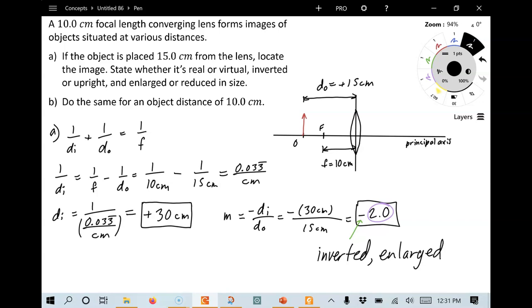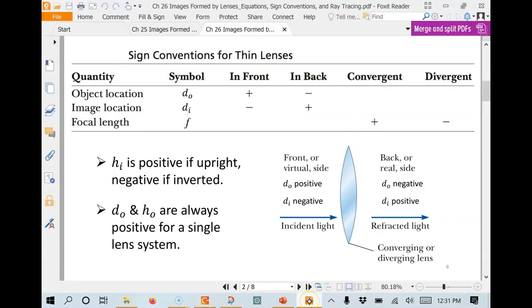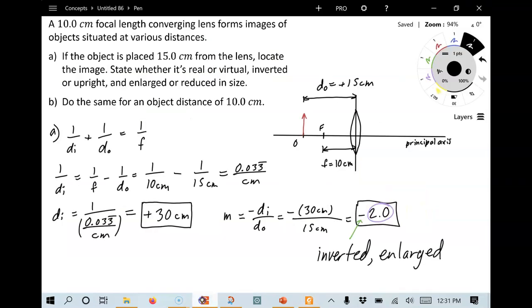And to figure out whether it's real or not, we can go back and look real quick here. The front side, virtual side. The back side, real side. DO, DI is positive. So this is real. And again, that's because we've got it on the front side.